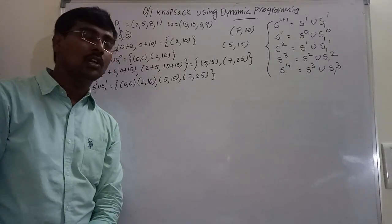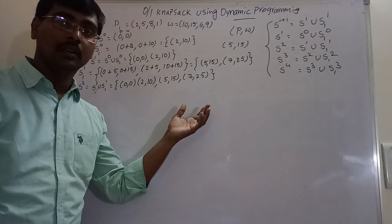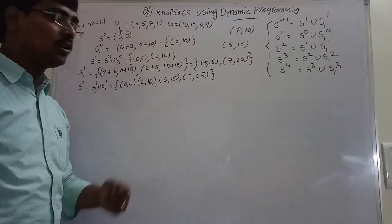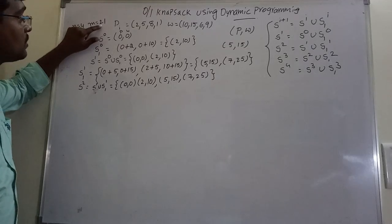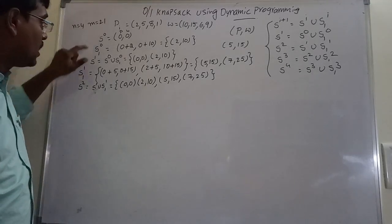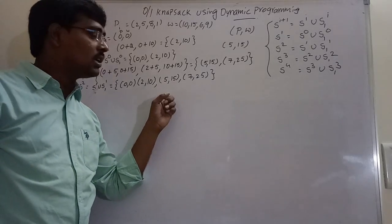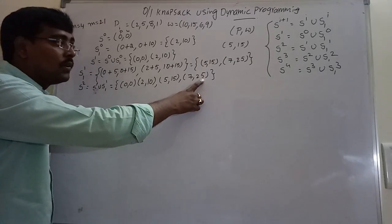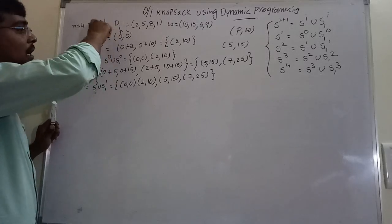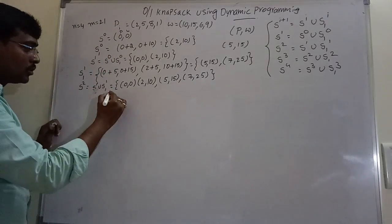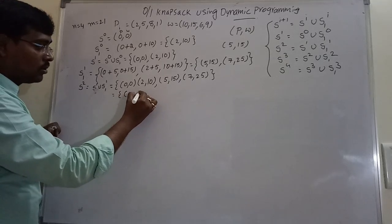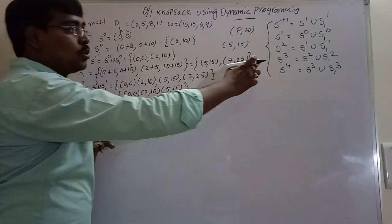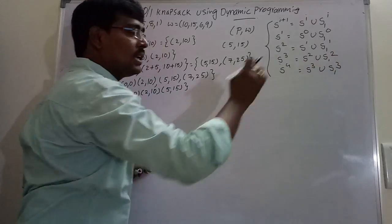At each stage, we apply the purging rule and check the knapsack capacity. The knapsack capacity is 21 — any pair whose weight is greater than 21 is removed. The pair (7,25) has weight 25 which exceeds capacity 21, so remove it. S^2 becomes {(0,0), (2,10), (5,15)}.